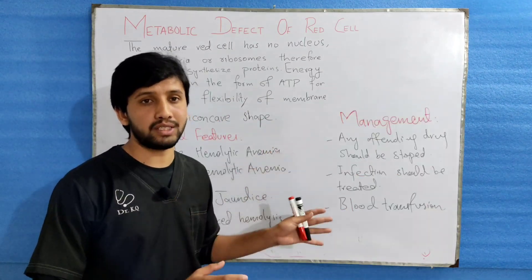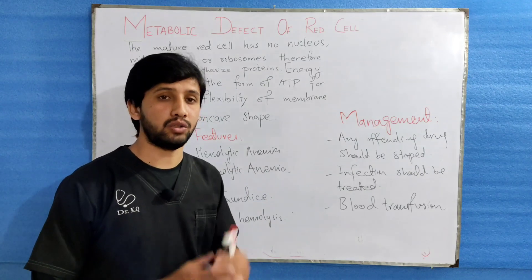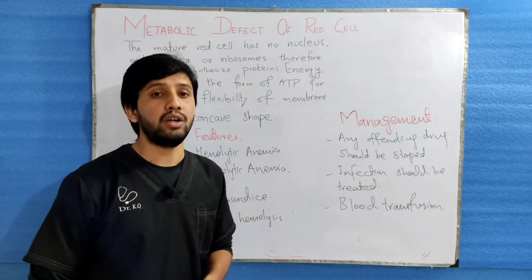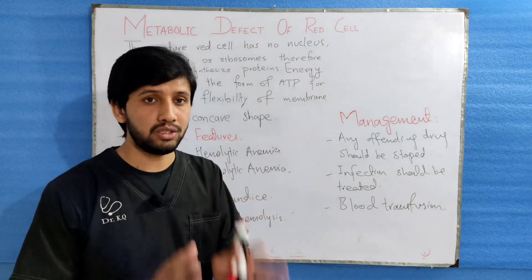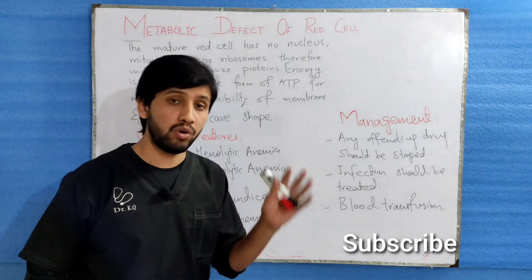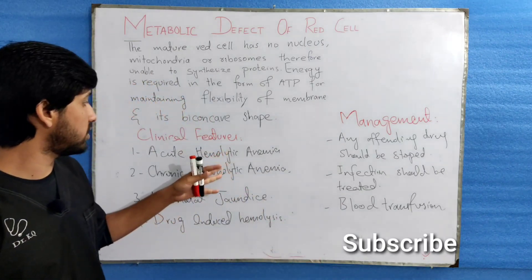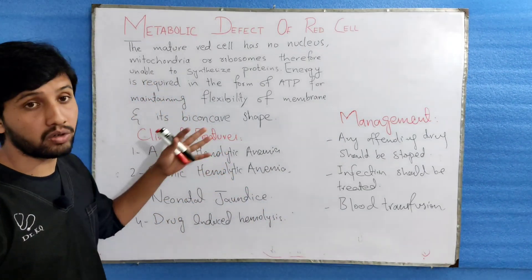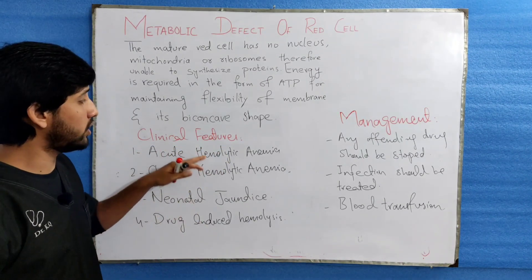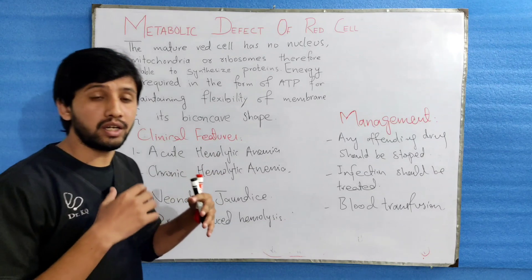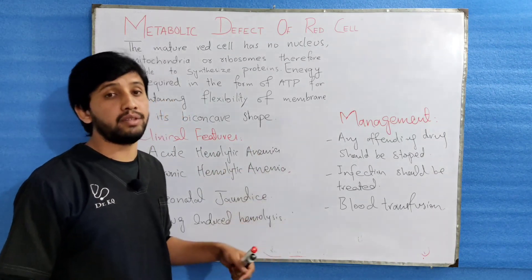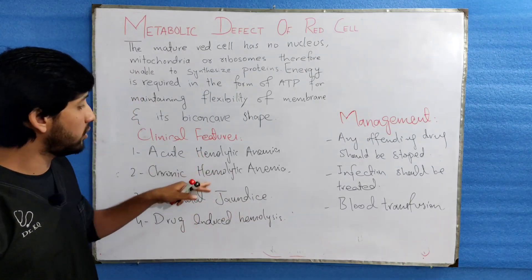We have discussed the two pathways and the two enzymes — pyruvate kinase and G6PD — and how their deficiency leads to hemolysis of RBCs. Now, coming to the clinical features: these include acute hemolysis of RBCs leading to acute hemolytic anemia, and patients can also develop chronic hemolytic anemia when there are severe enzyme deficiencies.